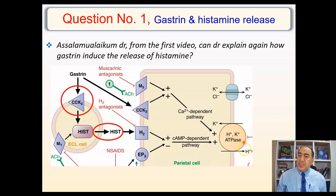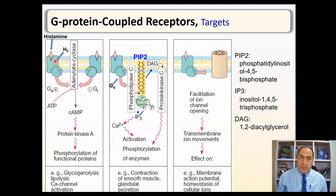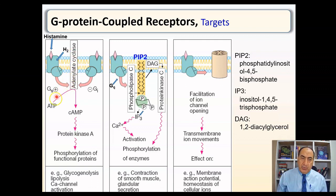So how do they activate HCL secretion? The major pathway: gastrin activates the release of histamine from the ECL. Histamine activates H2 receptors, which is a GS protein-coupled receptor. This will activate the GS protein, converting it from GDP status into GTP — guanosine triphosphate status — and this will activate adenylate cyclase, which converts ATP into cyclic AMP, which will activate protein kinase A.